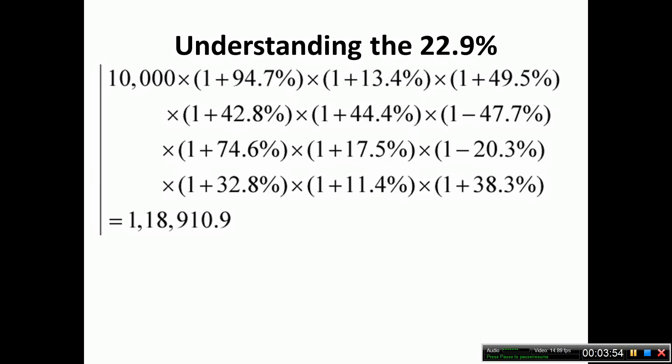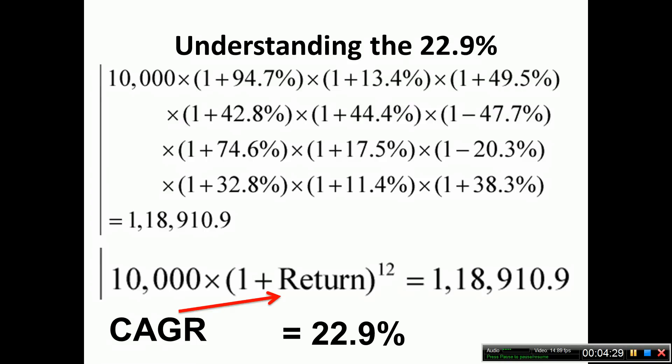Now you don't want this. People do not report this because it's messy to calculate annual returns and then write it down in this fashion. So what they do is to sweep all this return information under the carpet and focus only on the amount invested which is 10,000 and the value got which is 1.18 lakhs and they use both of them and put them in an equation like this. So all these returns are bundled into (1 + return) to the power 12 and that is called the compounded annualized growth rate and that is 22.9%.